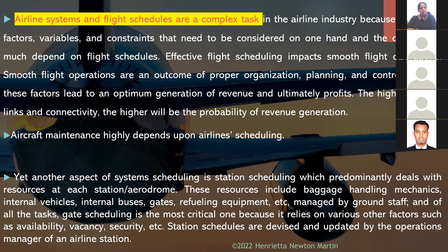These factors lead to an optimum generation of revenue and ultimately profits. The higher the city links and connectivity, the higher the probability of revenue generation. Aircraft maintenance also highly depends upon airline scheduling. Another aspect is station scheduling, which deals with resources at each station or aerodrome — including baggage handling, mechanics, internal vehicles, buses, gates, and refueling equipment managed by ground staff. Gate scheduling is the most critical task, relying on factors such as availability, vacancy, and security. Station schedules are devised and updated by the operations department.